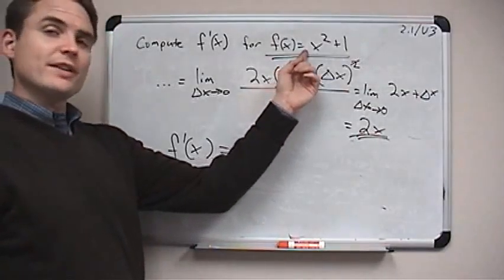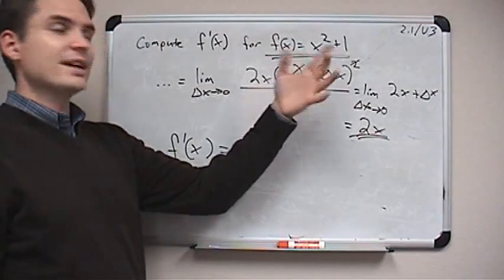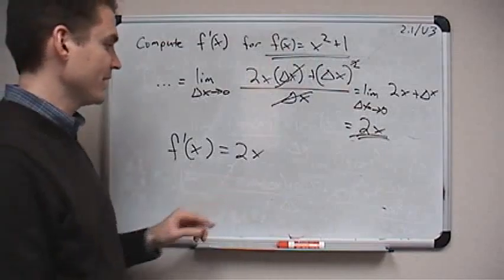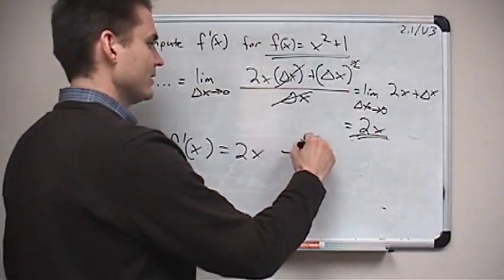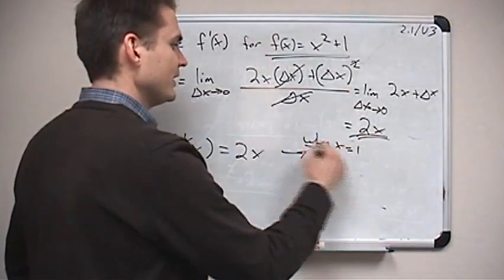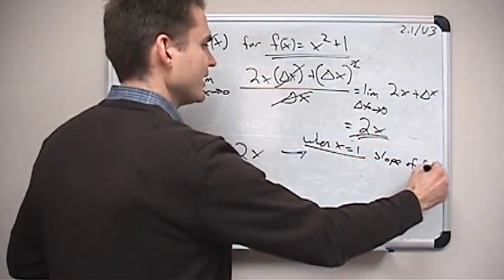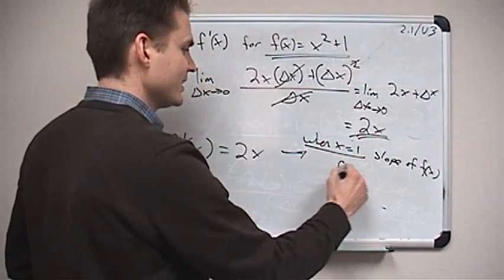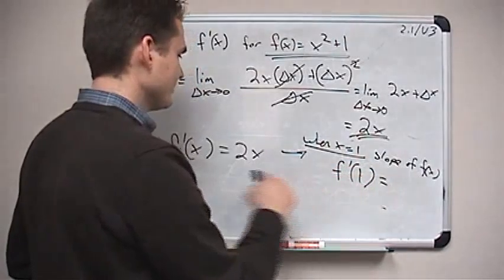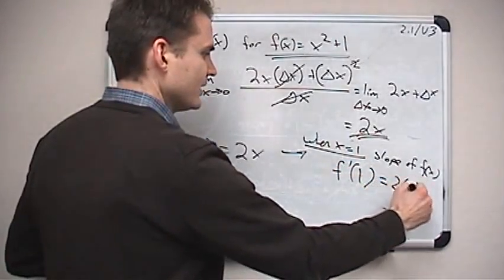So if you want to find the slope of this function when x is 1, you just put 1 in for x. So when x is equal to 1, the slope of f of x, the graph of f of x, is f prime of 1, 2 times 1, which is 2.